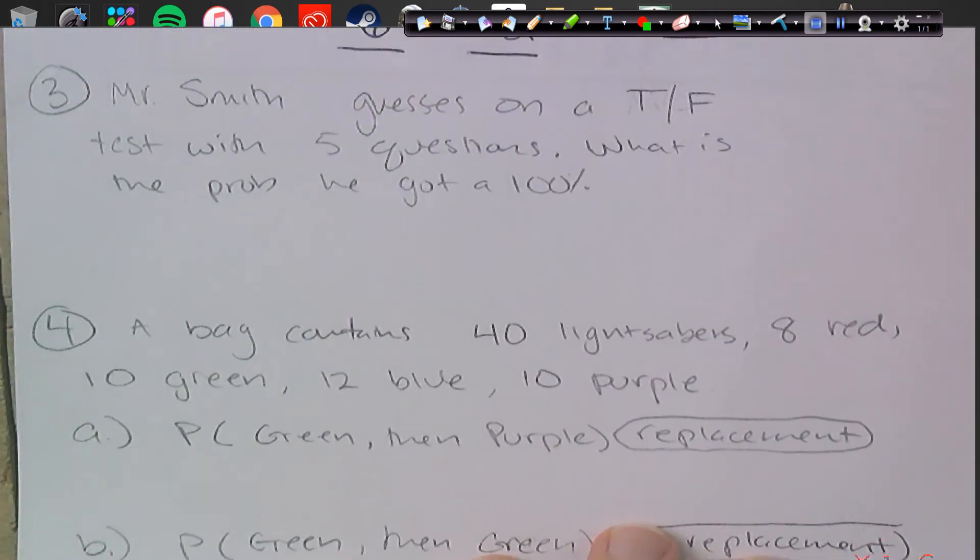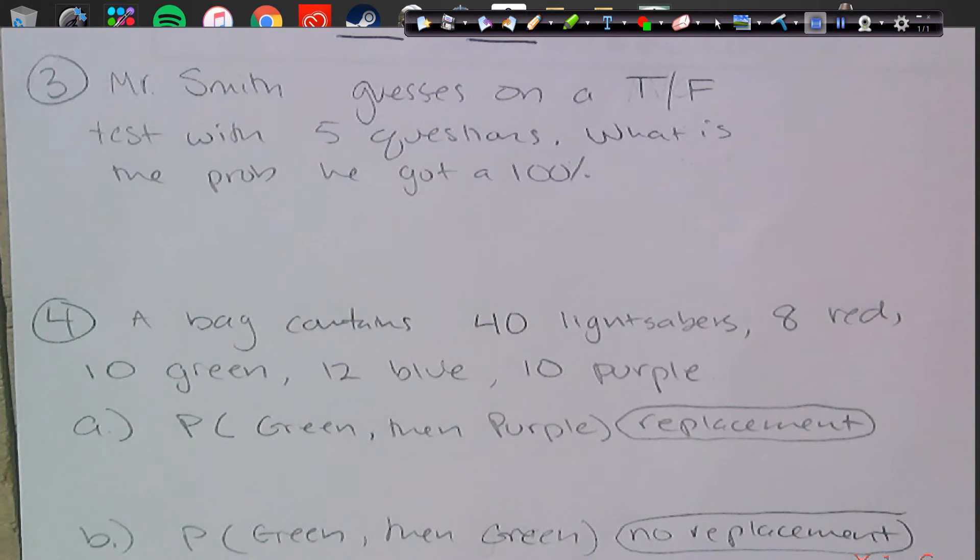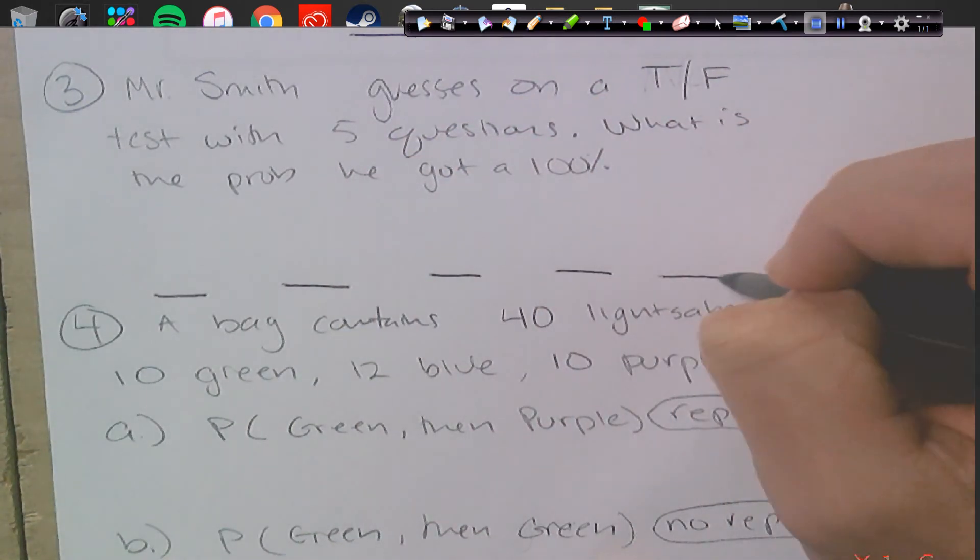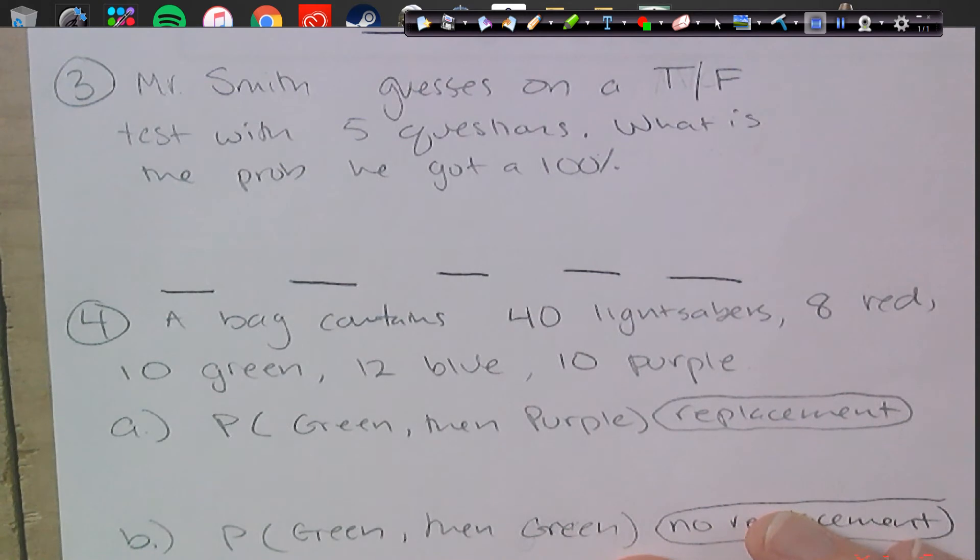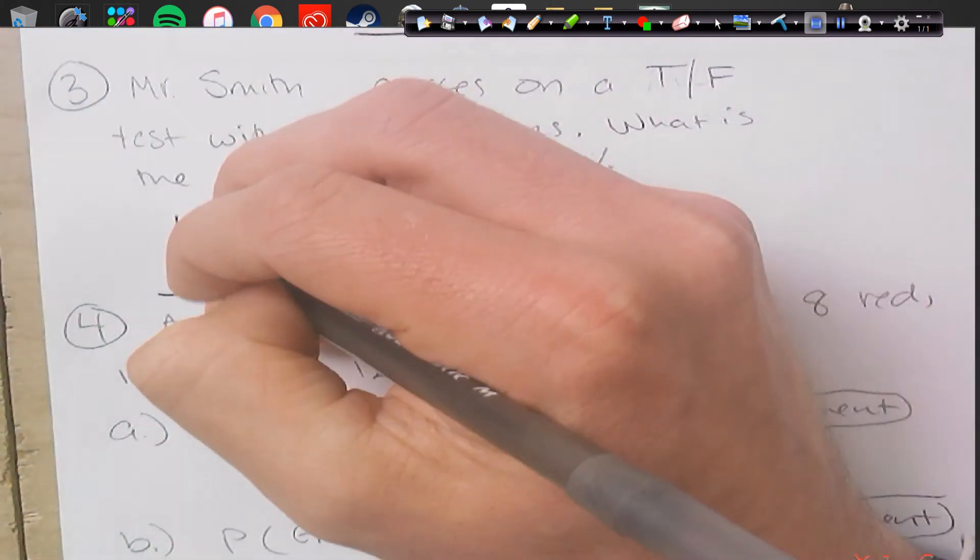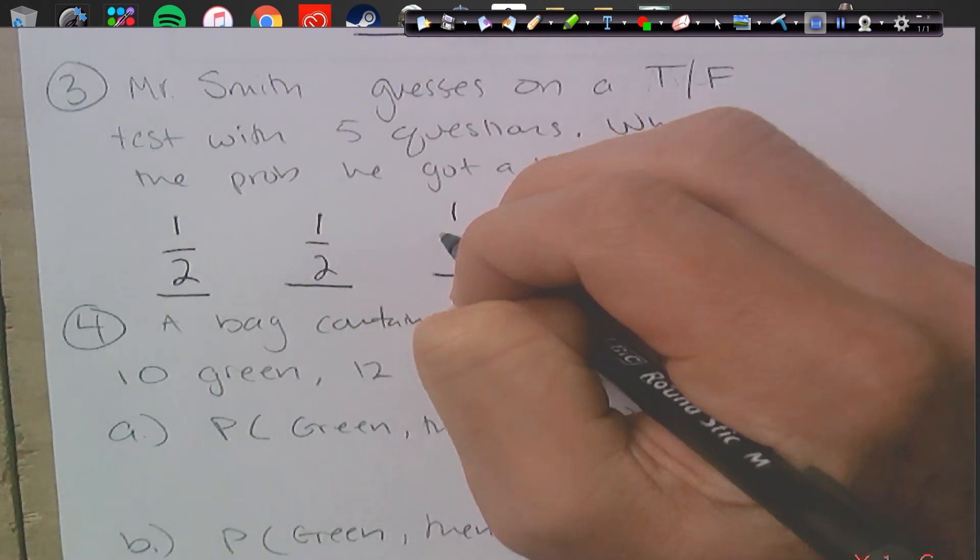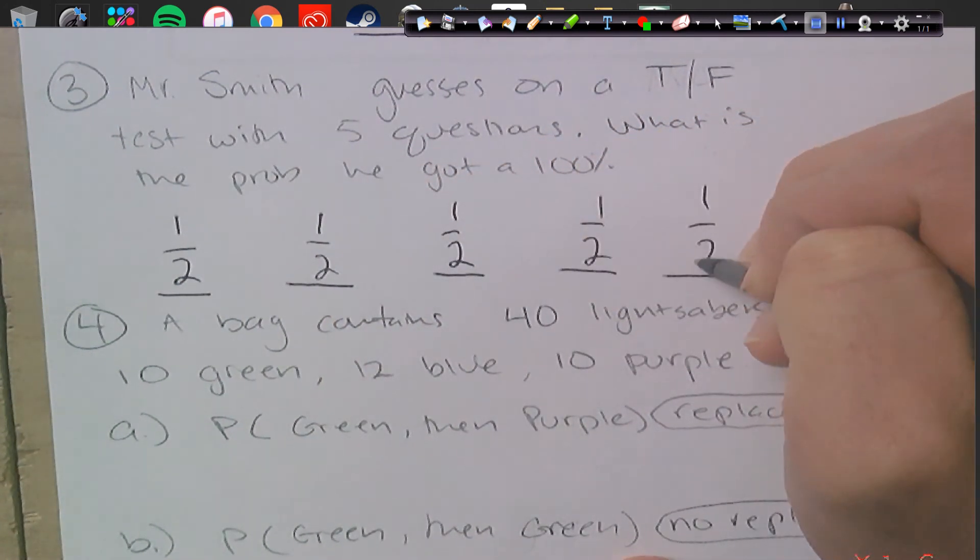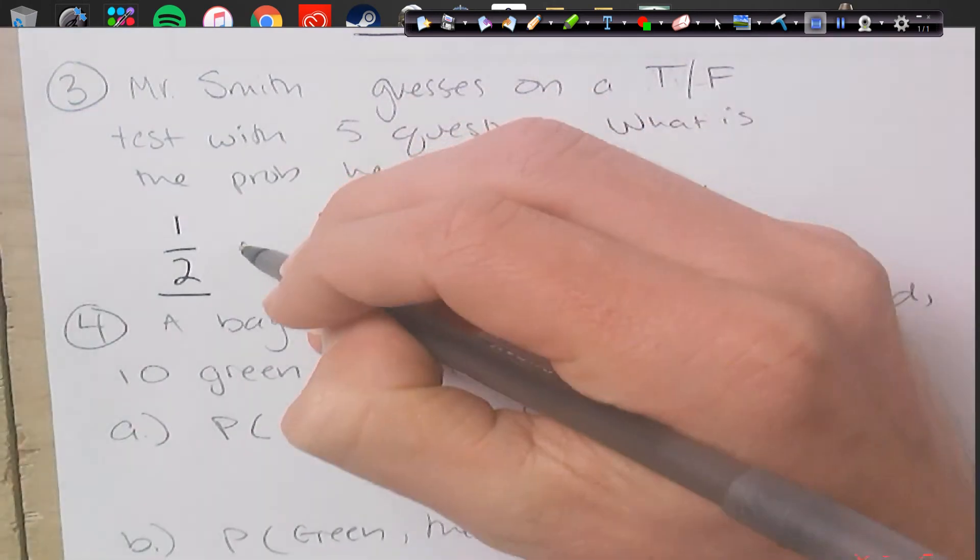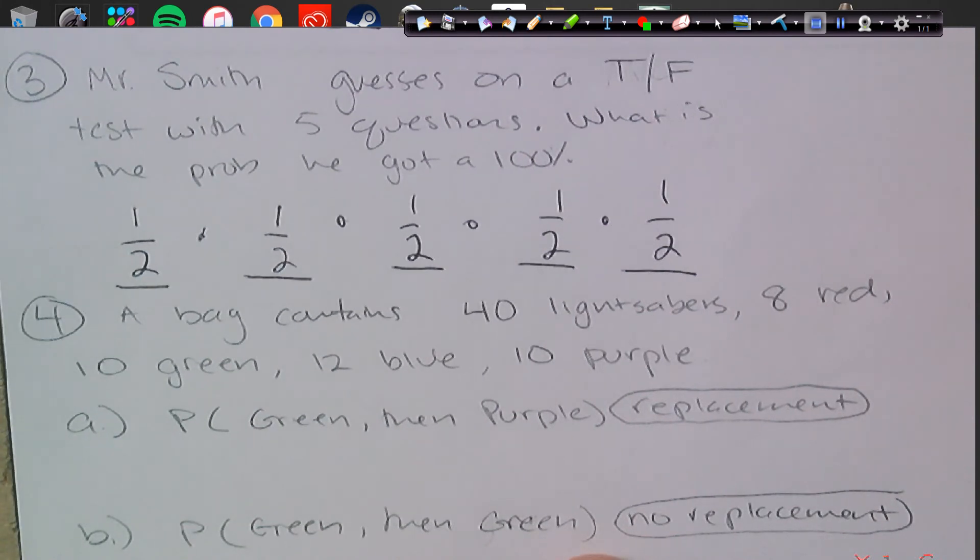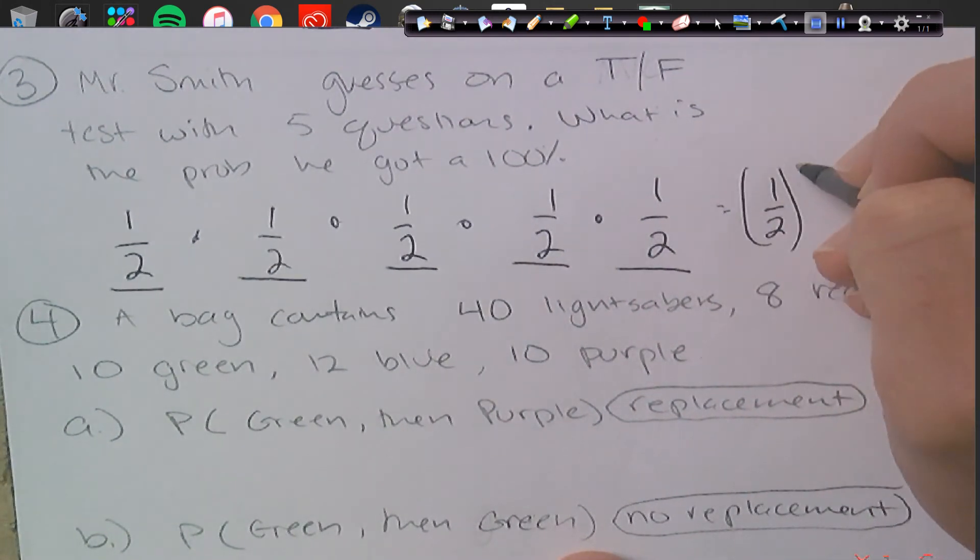Number 3, Mr. Smith guesses on a true or false test with 5 questions. What's the probability he got 100%? Okay, well, this is a very interesting question. We got 5 questions. Well, any problem, if he just guesses, it's true or false, one is right, one is wrong, he has a 1 out of 2 chance of getting it correct. And that's true for every problem. Just because he got 1 before doesn't change his results from the other one. So all we really have to do is multiply, because these are independent events, they don't change.